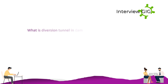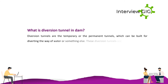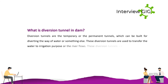What is a Diversion Tunnel and Dam? Diversion tunnels are temporary or permanent tunnels built to divert the flow of water or other materials. These tunnels are used to transfer water for irrigation purposes or to redirect river flows, and are mainly used as underground passageways.